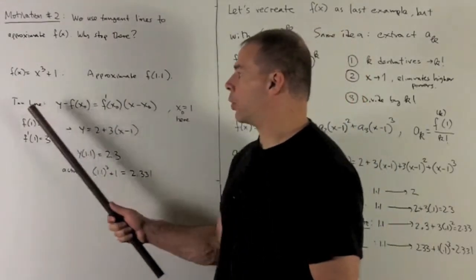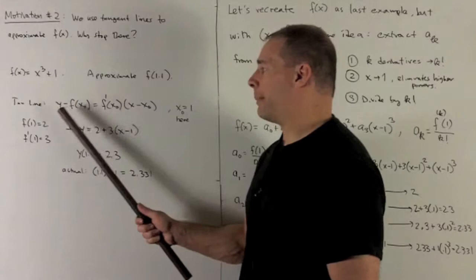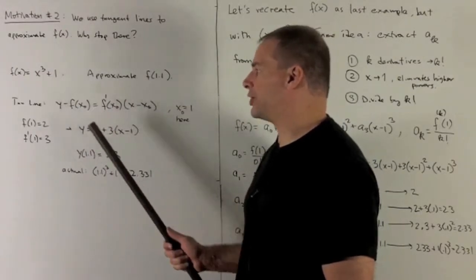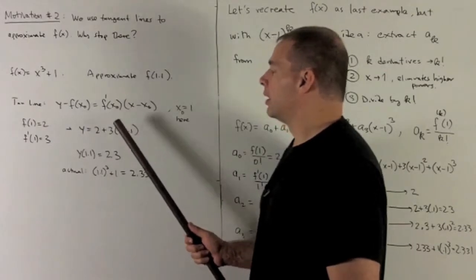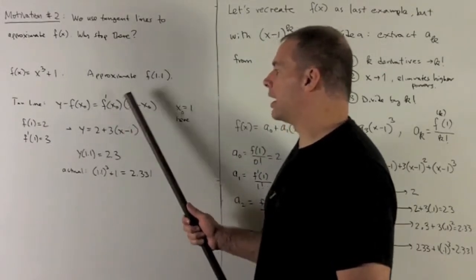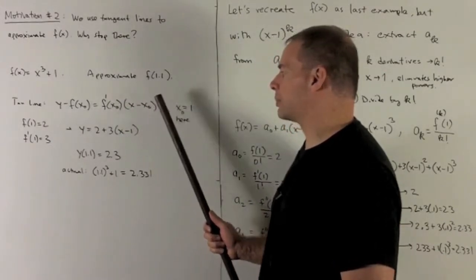Of course, we're going to use the point x₀ equal to 1. The equation for the tangent line is y minus y₀ equals the derivative of f evaluated at x₀ times x minus x₀.